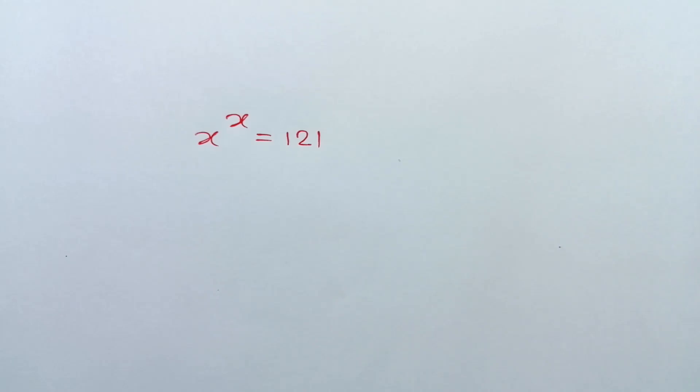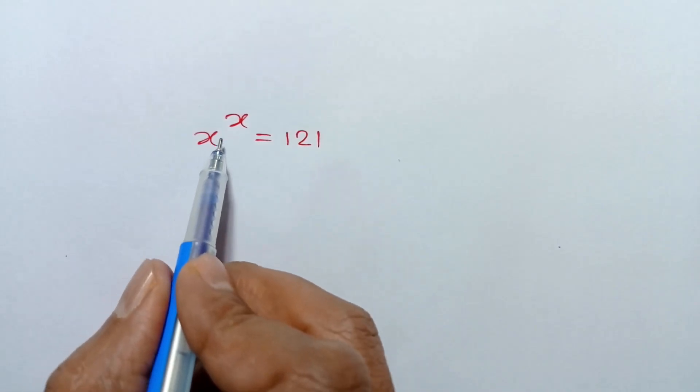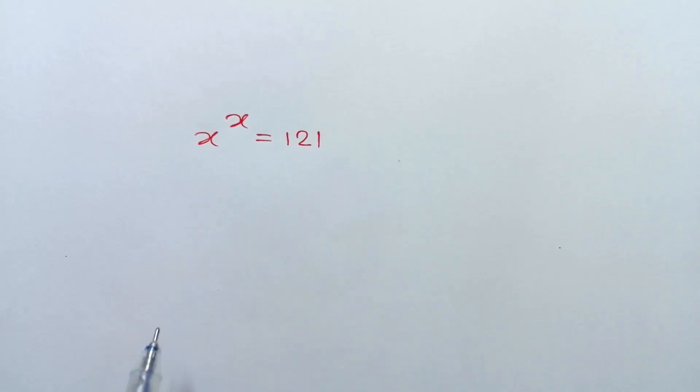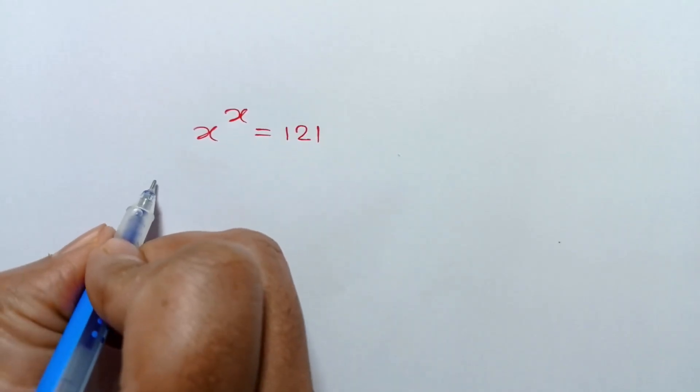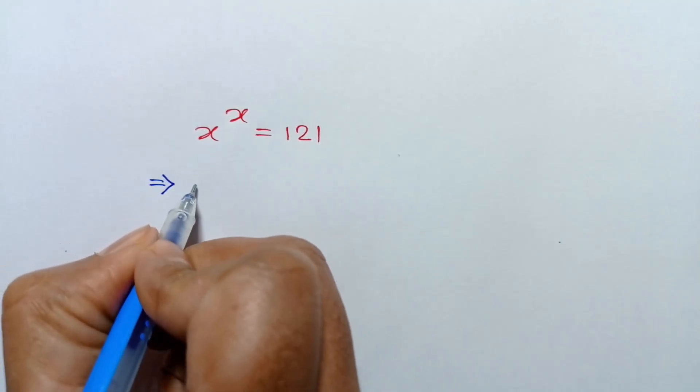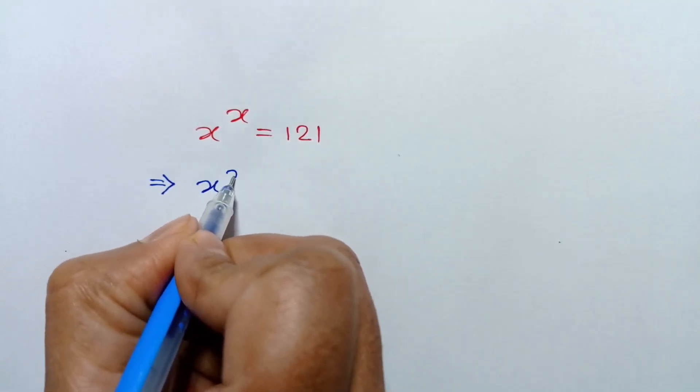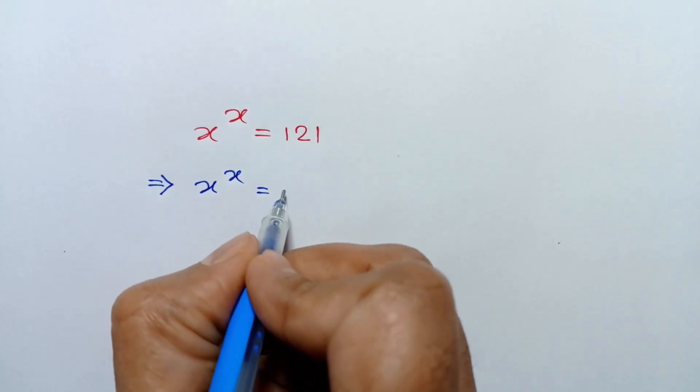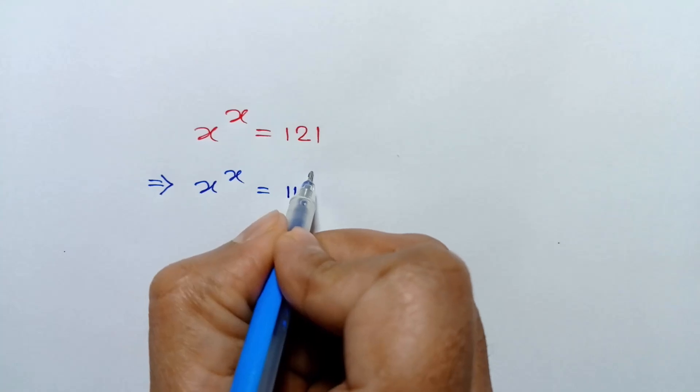Hi everyone. In this video, I am going to show how to solve x to the power x equals 121. The left side, x to the power x equals 121, can be written as 11 squared.